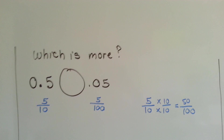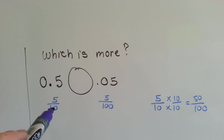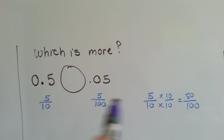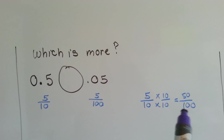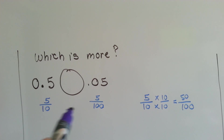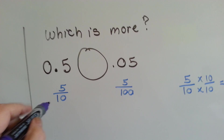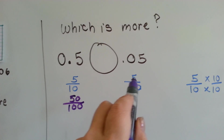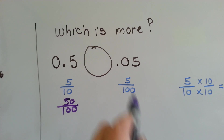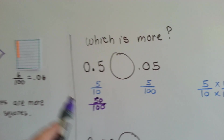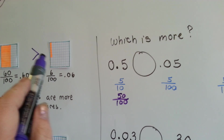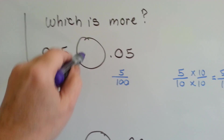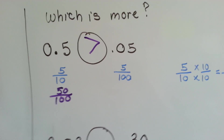Which is more — five-tenths or five-hundredths? We make the denominators the same and see we have fifty-hundredths. So five-tenths equals fifty-hundredths when we make the denominators the same. Which is bigger — fifty one-hundredths or five one-hundredths? If you had fifty little squares filled in or five little squares filled in, the five-tenths — which became fifty one-hundredths — is bigger.